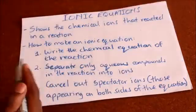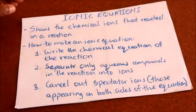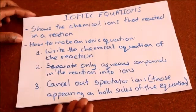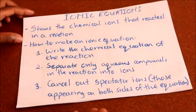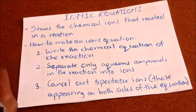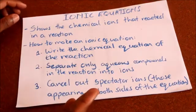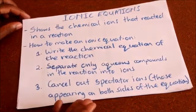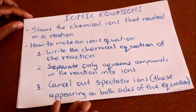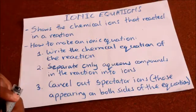The most interesting part: we have what we call ionic equations. Ionic equations show the chemical ions that reacted in a reaction, or we can say it describes a chemical reaction that involves ionic compounds. It shows only ions which take part in a reaction, and ions which do not take part in a reaction are called spectator ions.